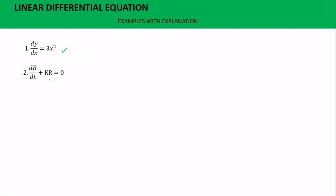For example two, the dependent variable is r and the independent variable is t. Since k is not a derivative, this equation is also linear. For example three, we see y-squared — the order here is two but the degree is one. Let's see whether this is linear or non-linear — you can pause the video and try.